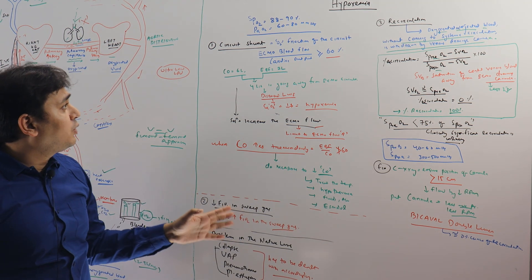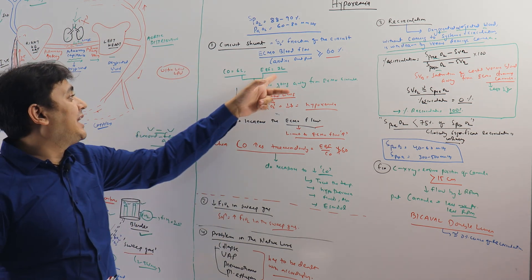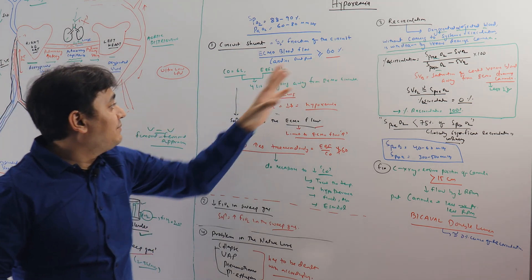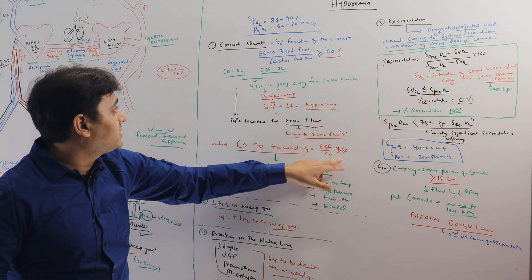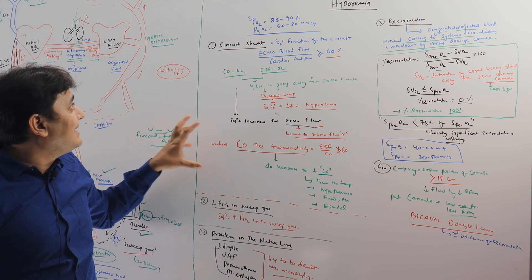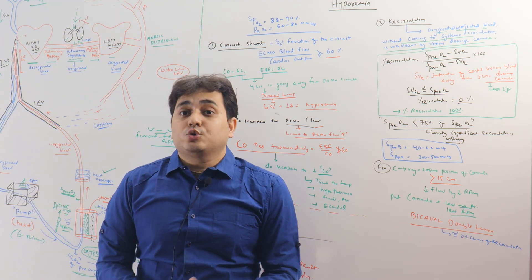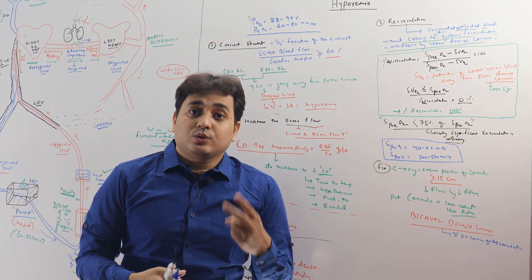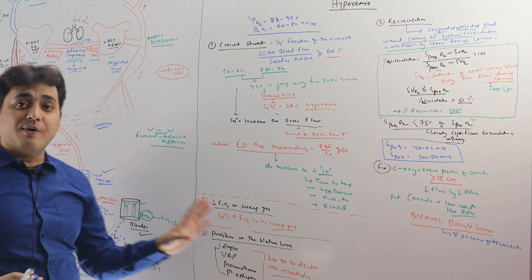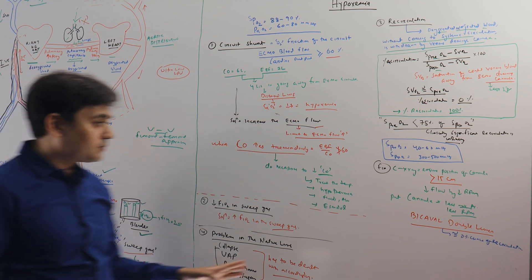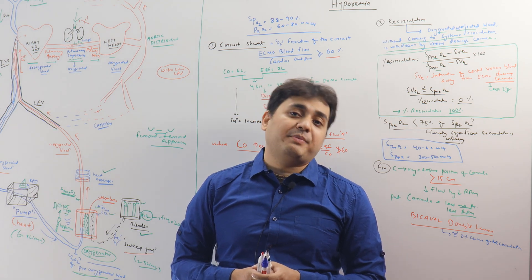Once those steps are done, if hypoxemia still persists, assess the circuit shunt: check whether adequate ECMO blood flow is being provided, whether the ratio is more than 60 percent, and if the cardiac output is very high, take steps to decrease it to maintain the ECMO flow-to-cardiac output ratio above 60 percent. Regarding carbon dioxide, if CO2 increases, either increase the sweep gas flow to remove it or do a chest X-ray to find other causes of hypoventilation. The next class will discuss other problems that can occur in ECMO patients.